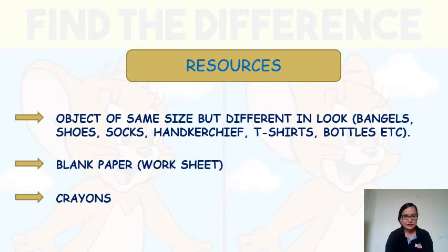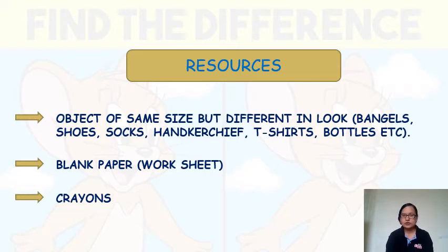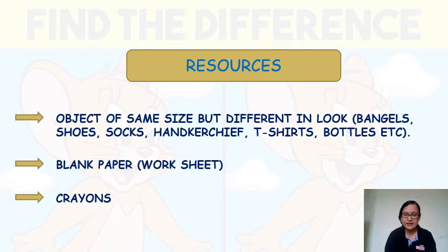These are the resources which are required for this activity. What you have to do first is find an object of the same size but different in looks in your house. For example, if you have bangles, you can use bangles of similar size, but you have to take care that there should be some difference. The difference can be of colors or pattern.